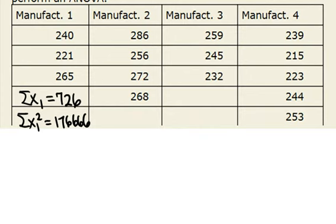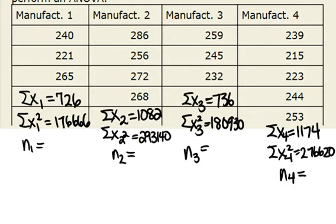So I'll now add the rest of these for the other four manufacturers. Now that all those sums have been added, we also need to record our sample size for each group. So n1 is 3, n2 is 4, and then we have a 3 and a 5, and if you add those all together, that's your total n which here is equal to 15.